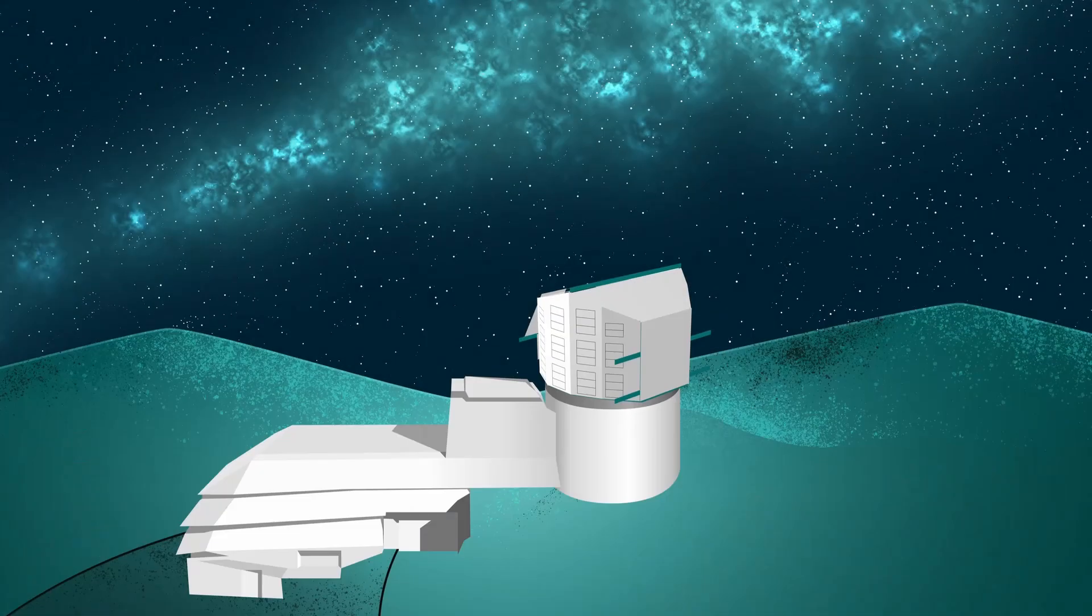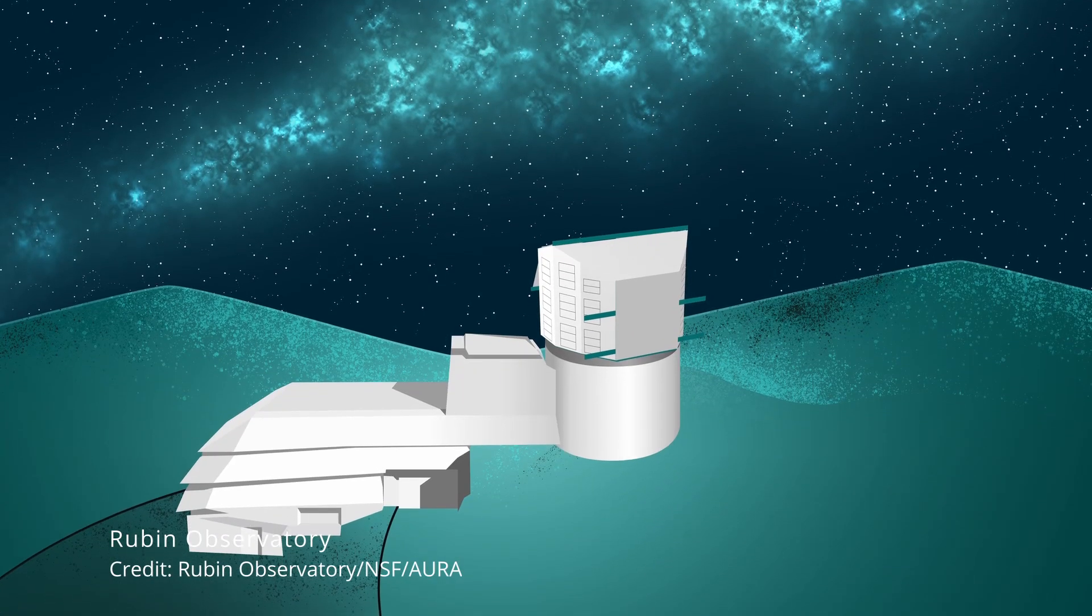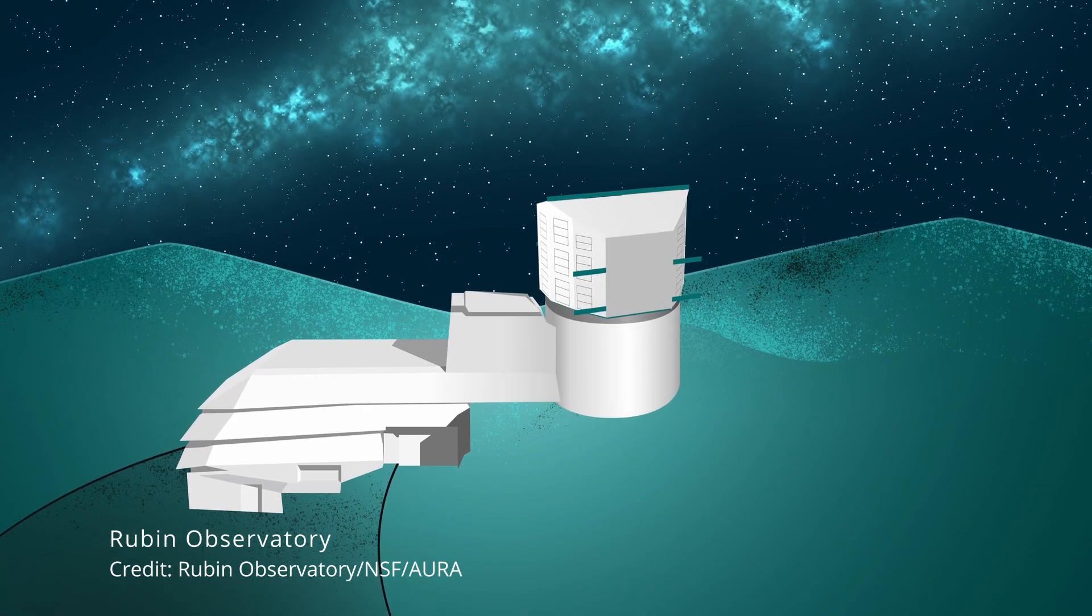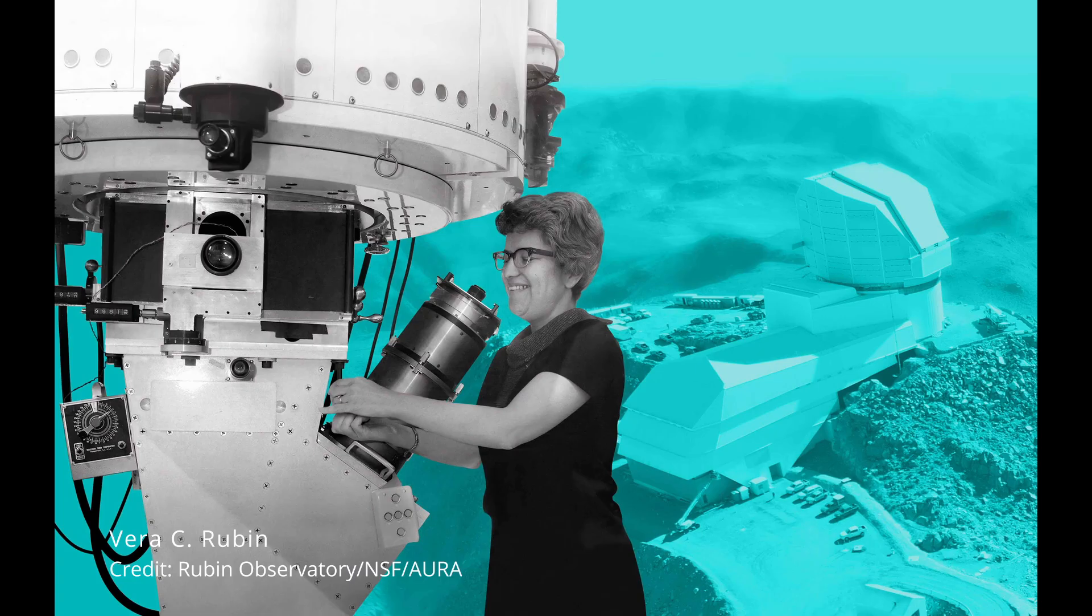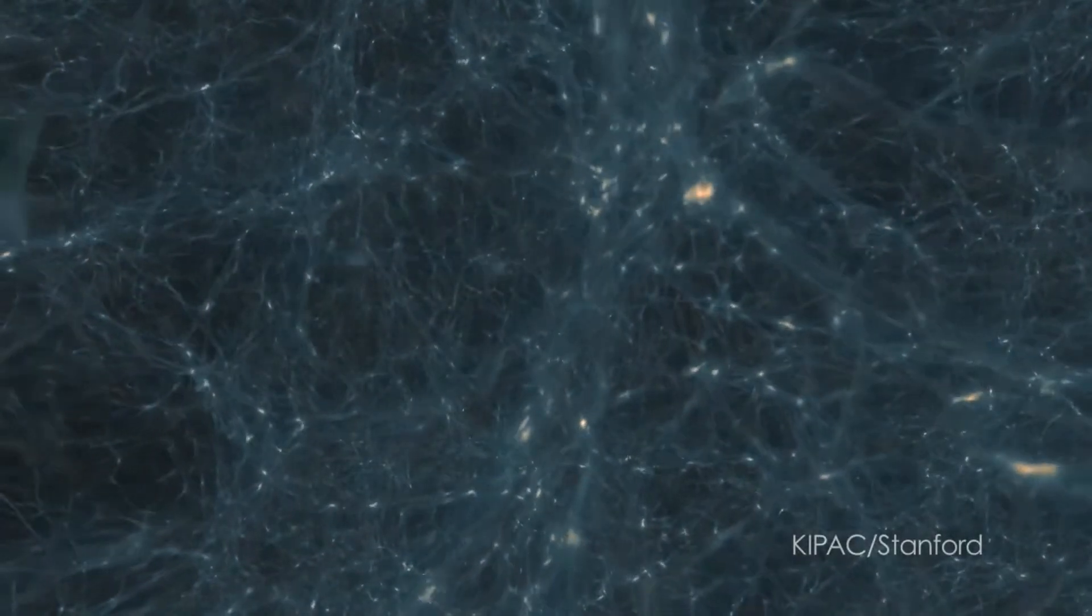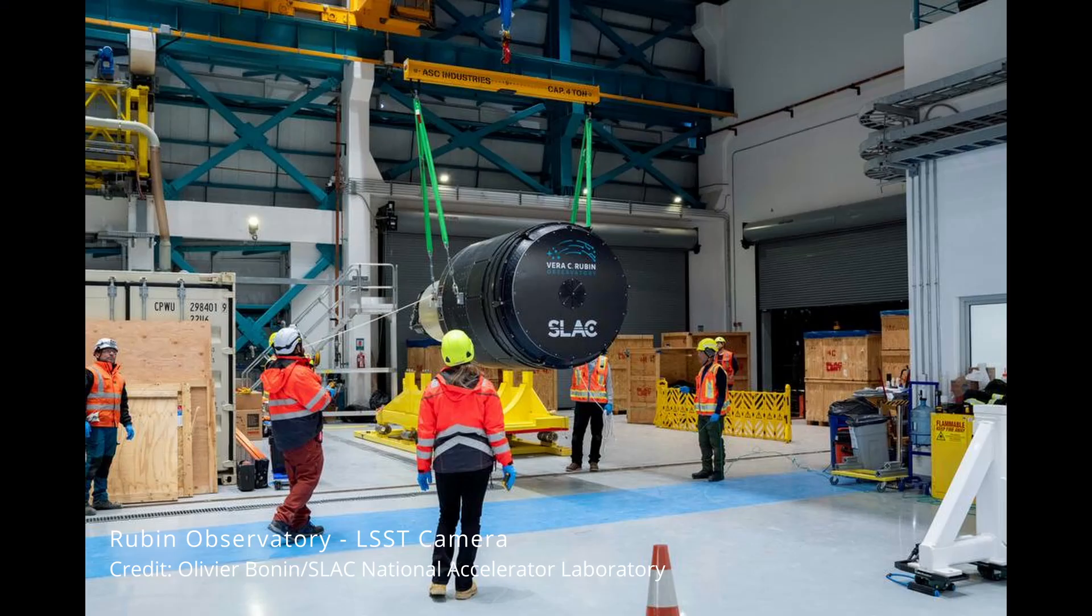The Rubin Observatory, officially known as the Vera C. Rubin Observatory, is named after a famed American astronomer whose work provided convincing evidence for the existence of unseen dark matter in the universe. At its heart lies the Large Synoptic Survey Telescope, or LSST.